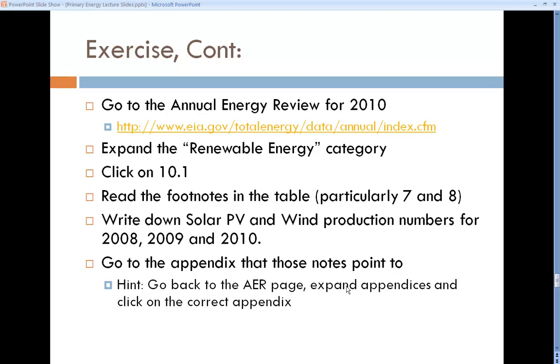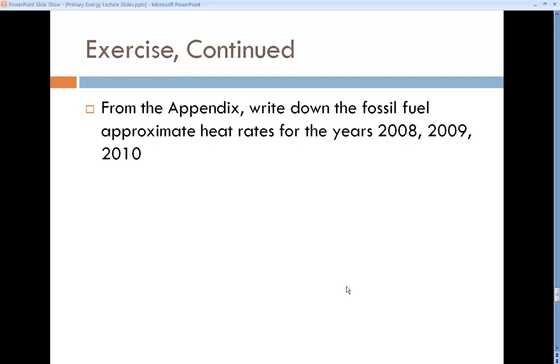To do that, hit the back button on your browser. Where you click to expand renewable energy chapter 10, the last one is appendices. Open up appendices. Go to the appendix that is referred to in those footnotes. That's a big table that goes back to 1949. Write down the fossil fuel approximate heat rate for those three years: 2008, 2009, 2010.